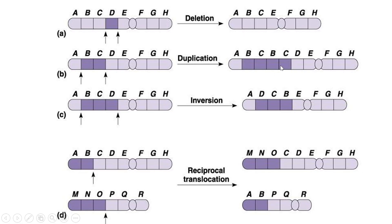Another type of chromosomal mutation is inversion. This is when genes swap 180 degrees. You have A, B, C, D normally, but in this case the B, C, D segment is reversed — so now D comes first, then C, then B. This segment was inverted 180 degrees.